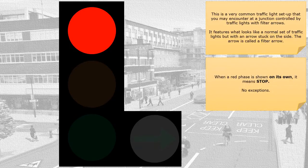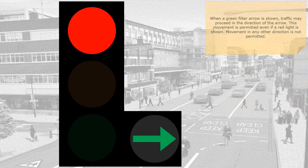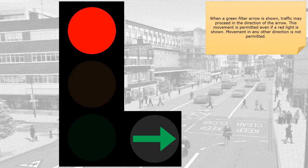When a red phase is shown on its own, it means stop. When a green filter arrow is shown, traffic may proceed in the direction of the arrow. This movement is permitted even if a red light is shown. Movement in any other direction is not permitted.